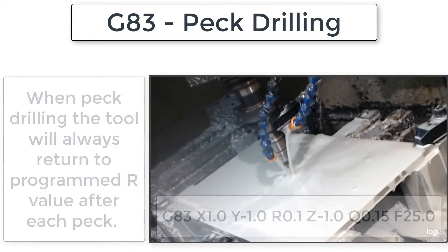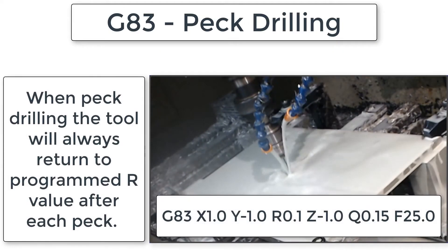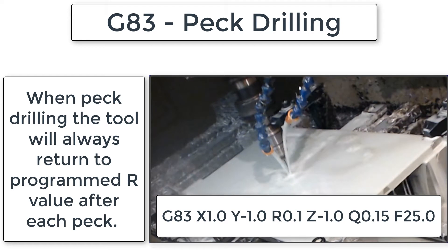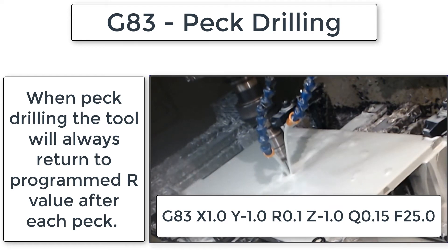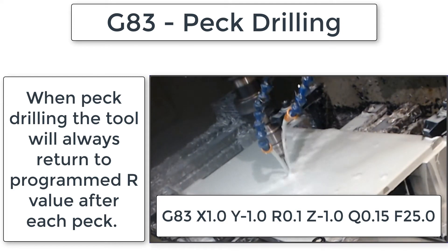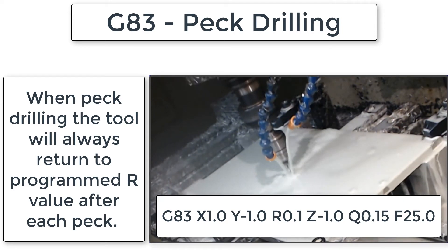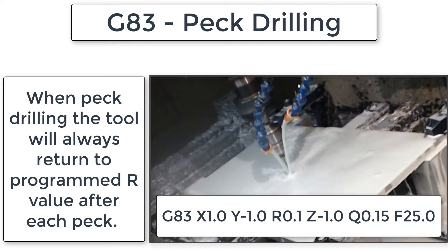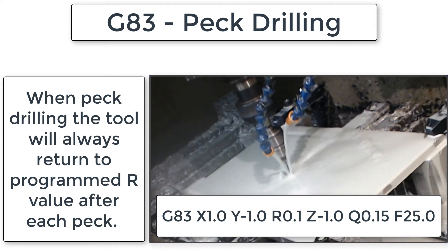G83 is a peck drilling cycle. With this cycle, the tool first rapids to the X and Y location. Next, the tool will rapid to the programmed R level, which in this case is Z0.1, or 100 thou above the part, as the top of the part is Z0.